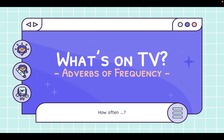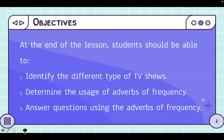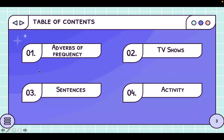Today we are going to talk about what's on TV. But before that, we will discuss a little bit about adverbs of frequency. So we will be talking about adverbs of frequency — it's like how often do you do things. We will look at some different types of TV shows, determine how to use adverbs of frequency, and then answer questions using them. We will discuss adverbs of frequency first, then TV shows, sentences, and activity.